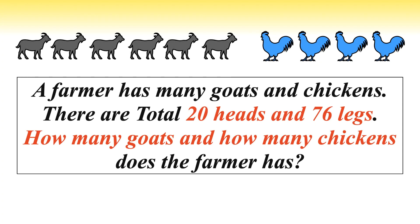Welcome to Simply Logical, this is Vengdesh. A farmer has many goats and chickens. There are total 20 heads and 76 legs. How many goats and how many chickens does the farmer have?